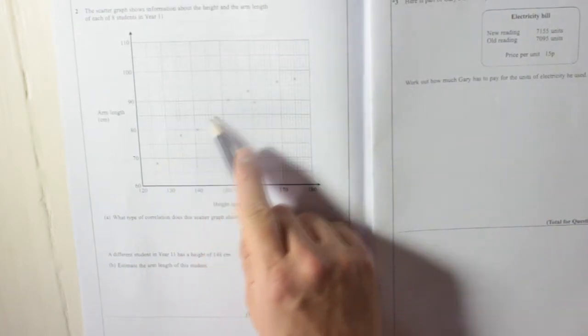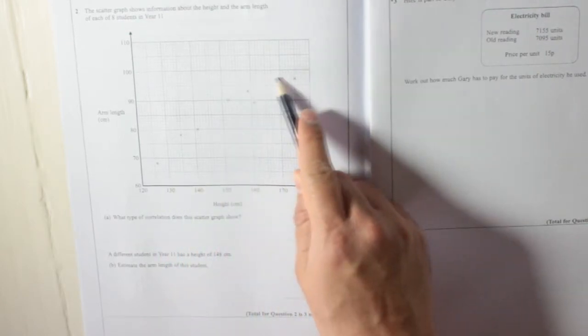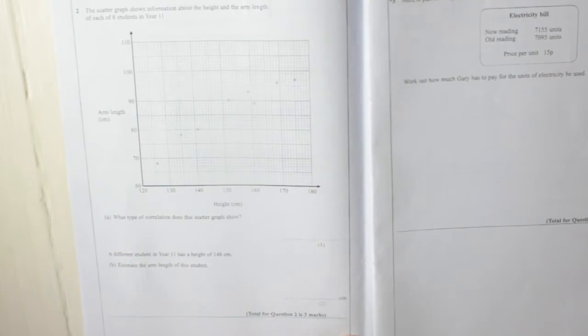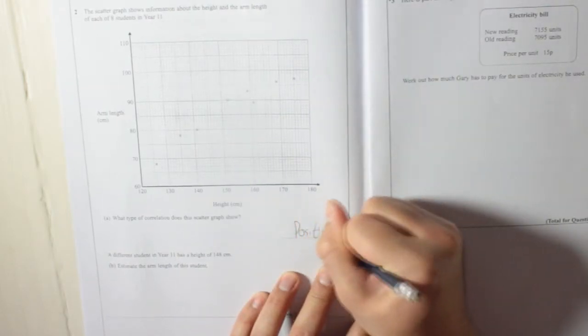Because the dots are going upwards, it means as height increases, arm length increases. So that is a positive correlation.